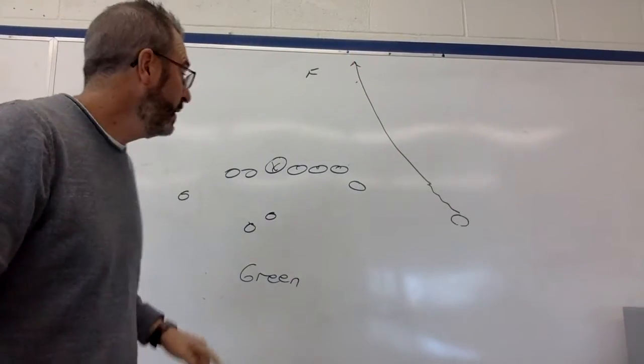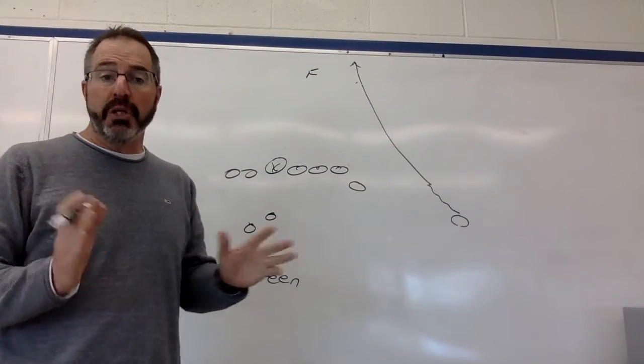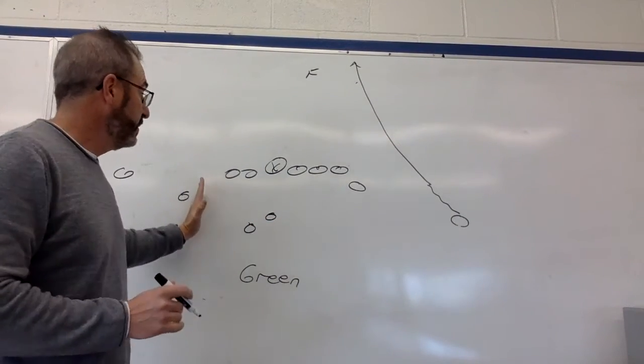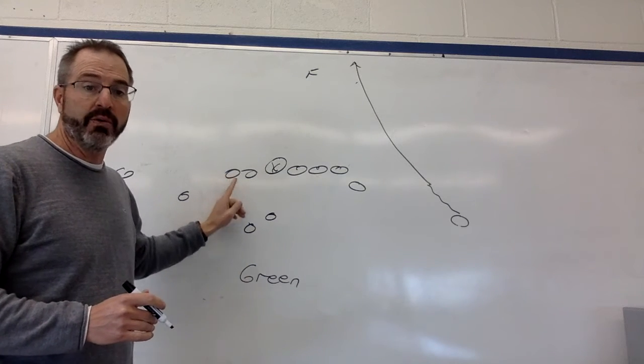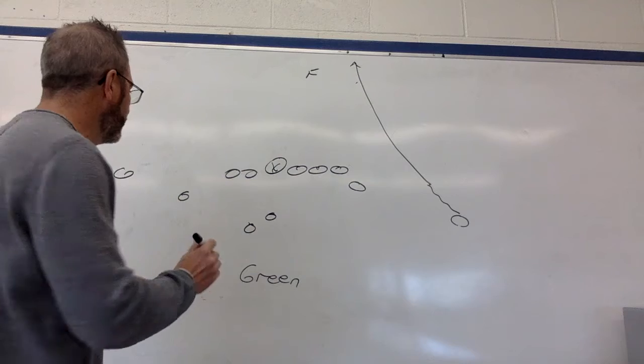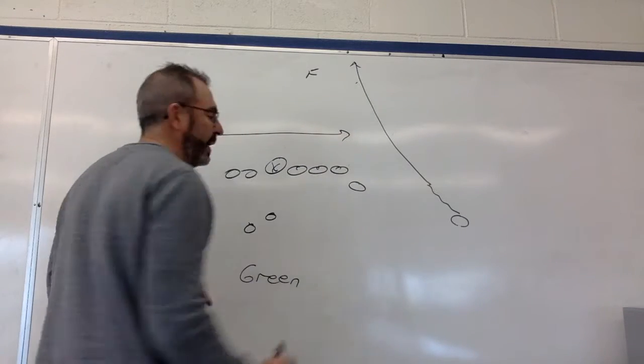Now the other thing that I want to do on green has to do with our slot. Mitchie, I want you to be able to get into this play. So I'm going to ask you to align yourself closer to the tackle, probably three to four yards away. Waggle and then run your drag across.